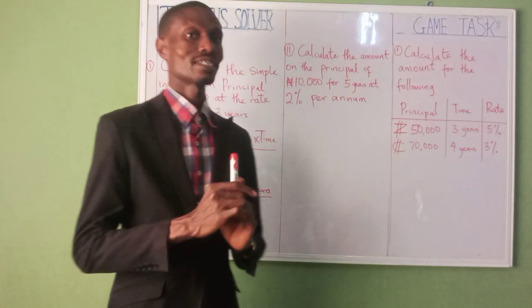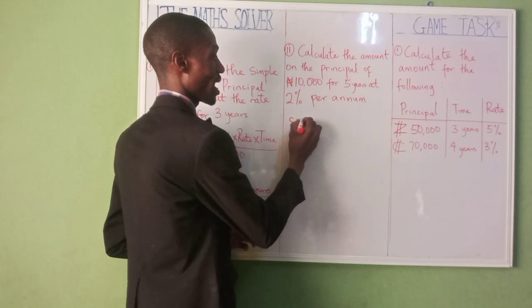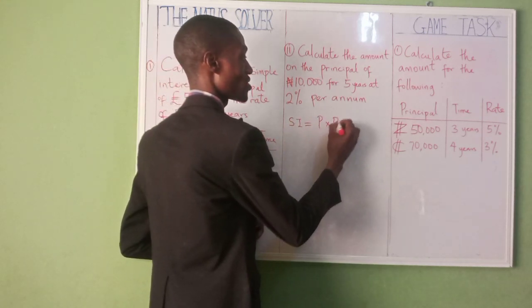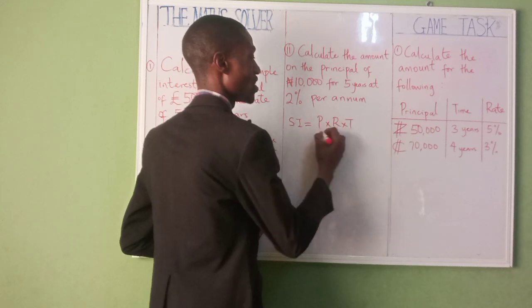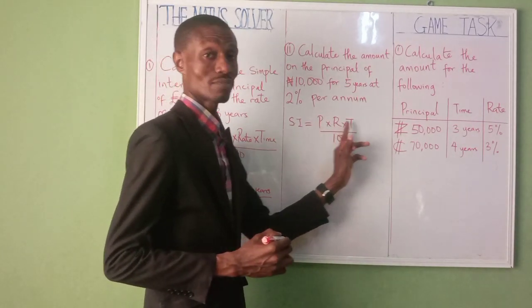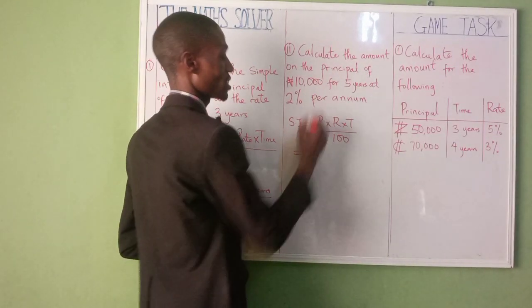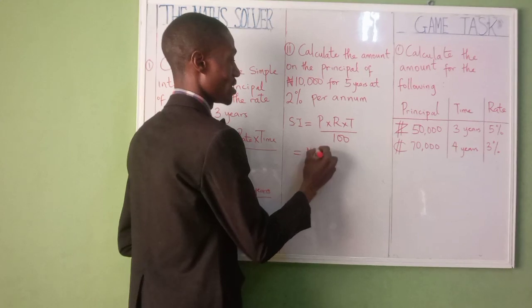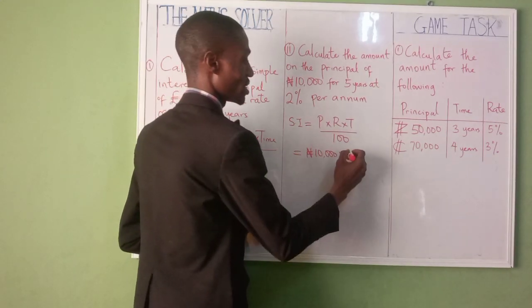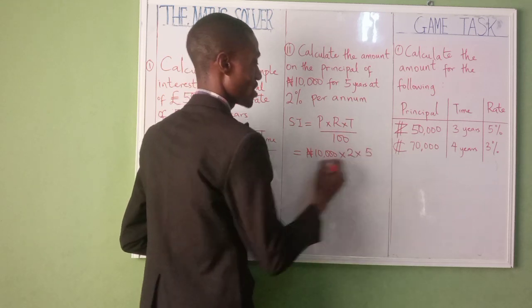Let's calculate our simple interest here first. Don't forget, like I told you: SI equals P times R times T over 100 — that is Principal times Rate times Time, divided by 100. According to this, our principal here is 10,000 Naira, times our rate is 2, and the time is 5 years.